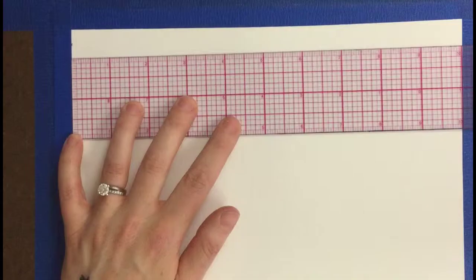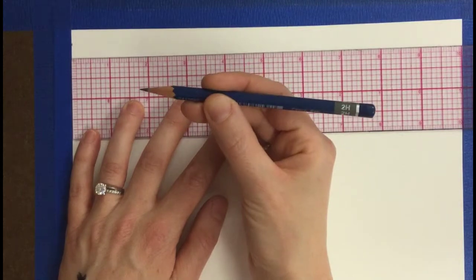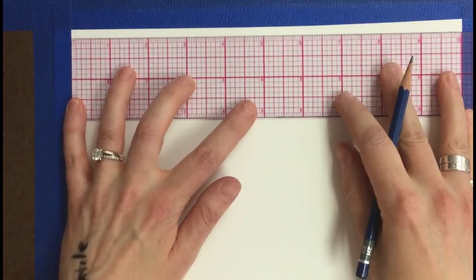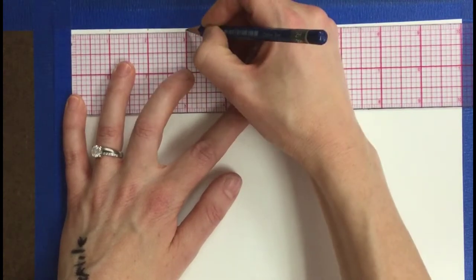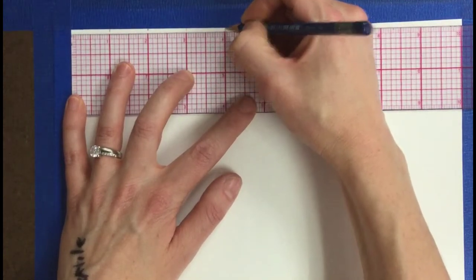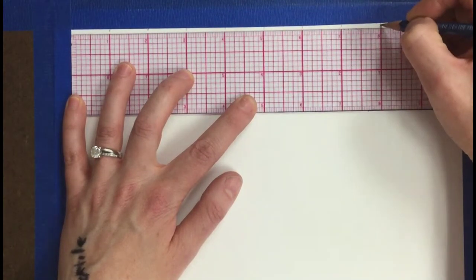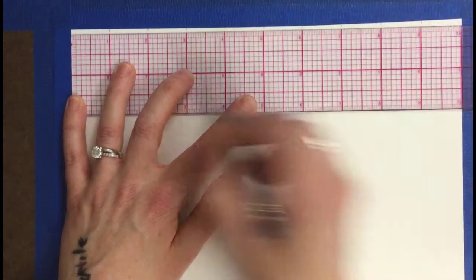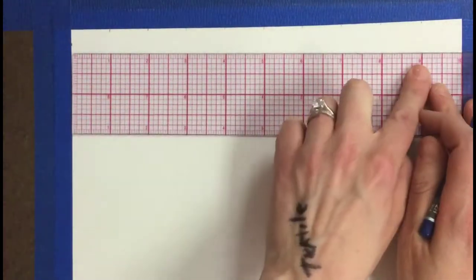So I'm using a 2H pencil to do this grid. We haven't gone into drawing pencils yet. 2H is basically a pencil that's going to appear lighter on your page. It's not going to smear and smudge as much. And this time I'm doing a 1-inch grid, so at every 1 inch I did a tick mark.